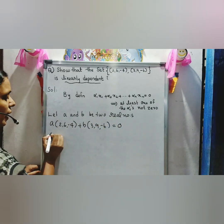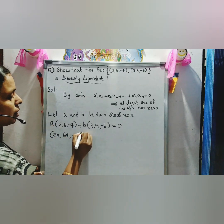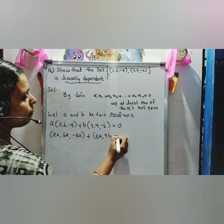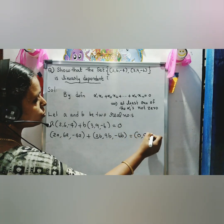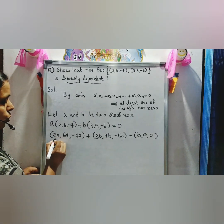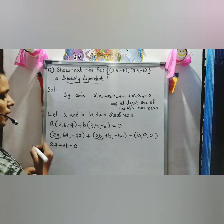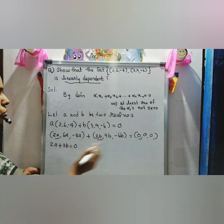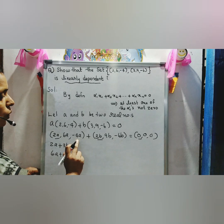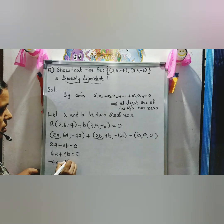Expanding: (2A, 6A, -4A) + (3B, 9B, -6B) = (0, 0, 0). This gives the system of equations: 2A + 3B = 0, 6A + 9B = 0, and -4A - 6B = 0.